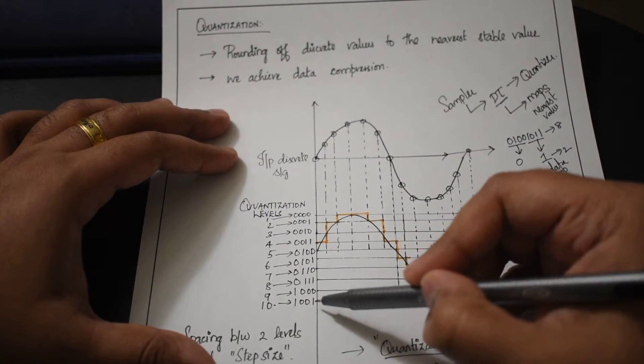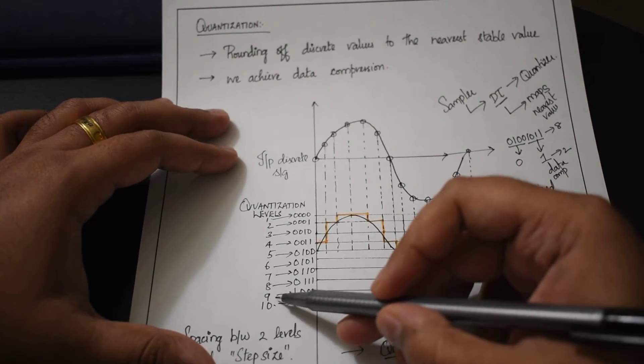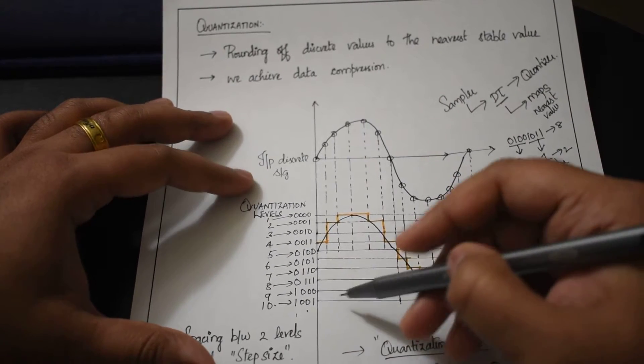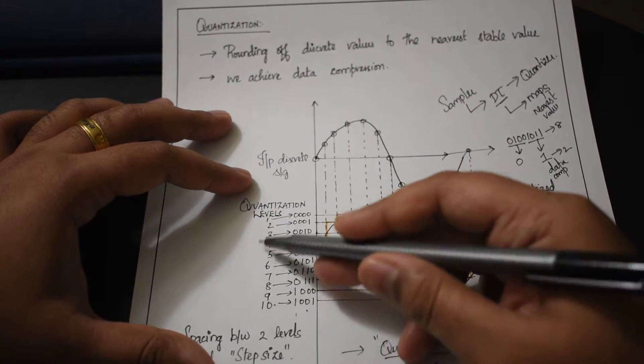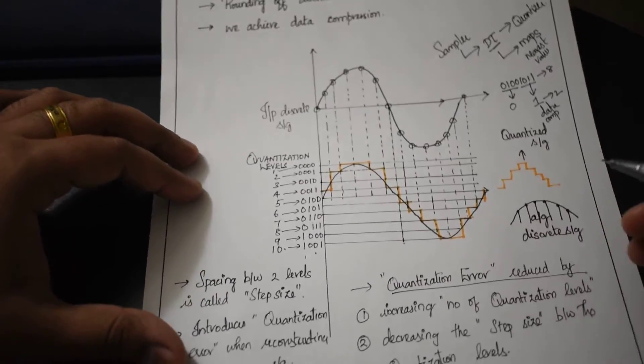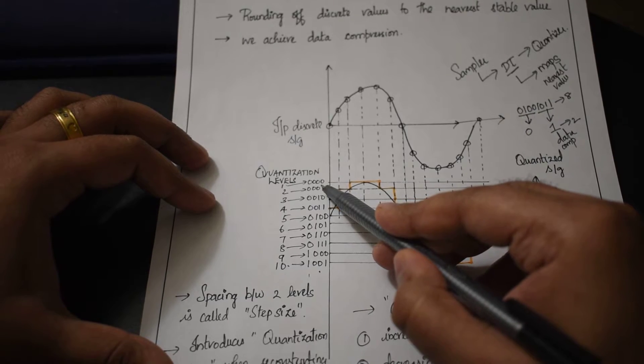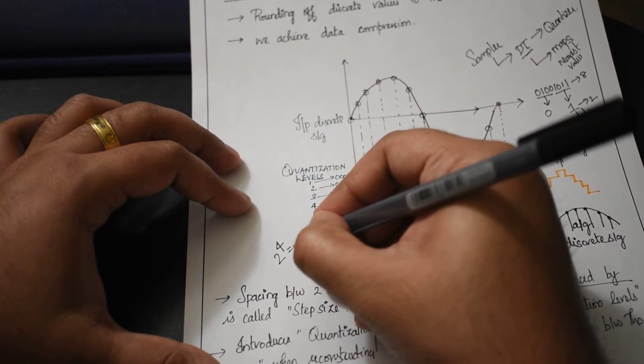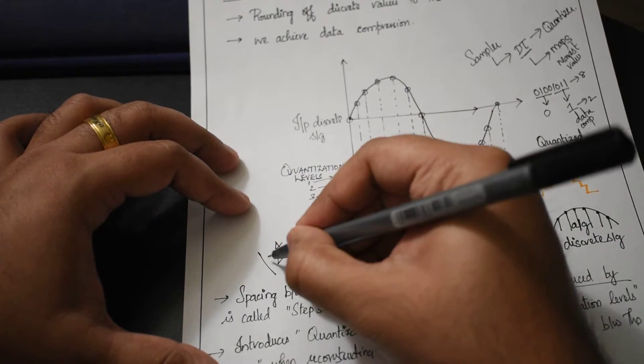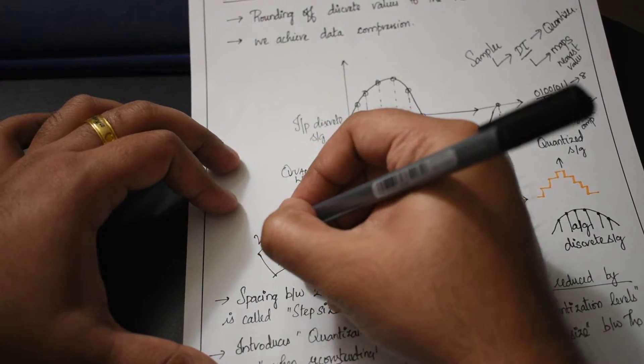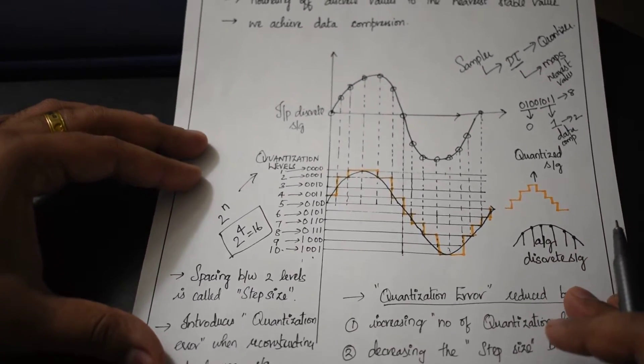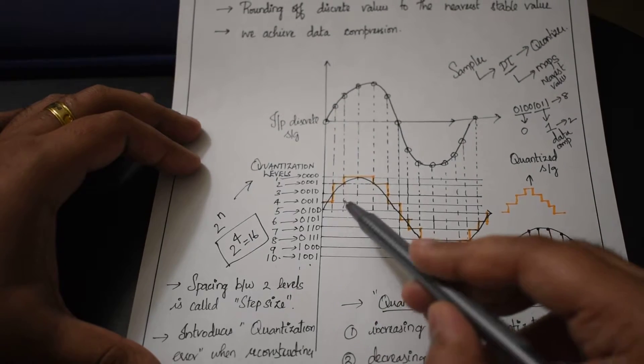We can have 16 combinations. For a 4-bit, we'll have 16 different combinations up to 1111. I've taken 10 levels here. For 4 bits, you get 2^4, which is 16. So 2^n is the formula for finding the total number of quantization levels.